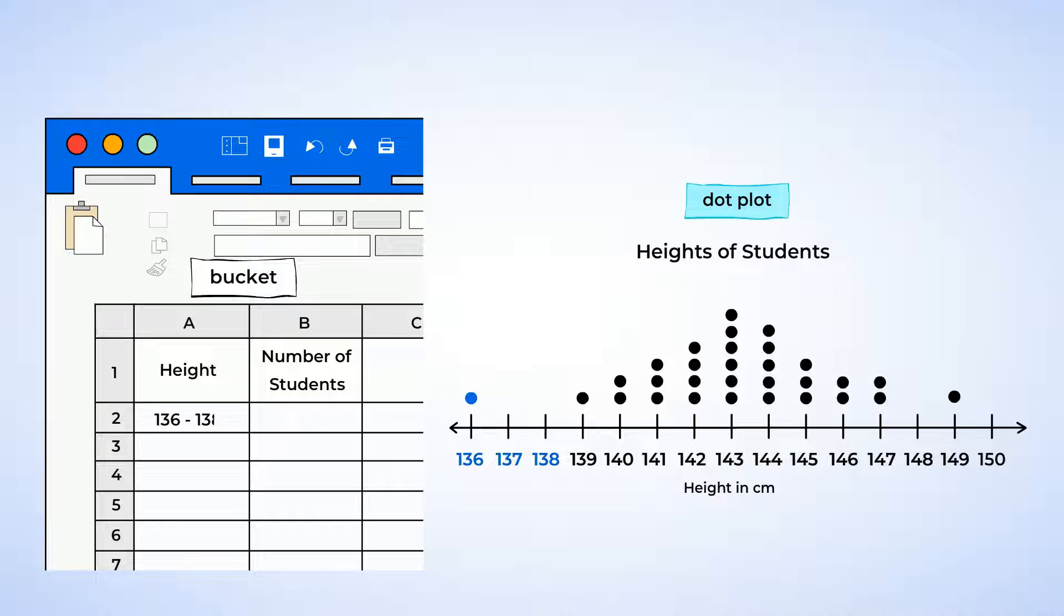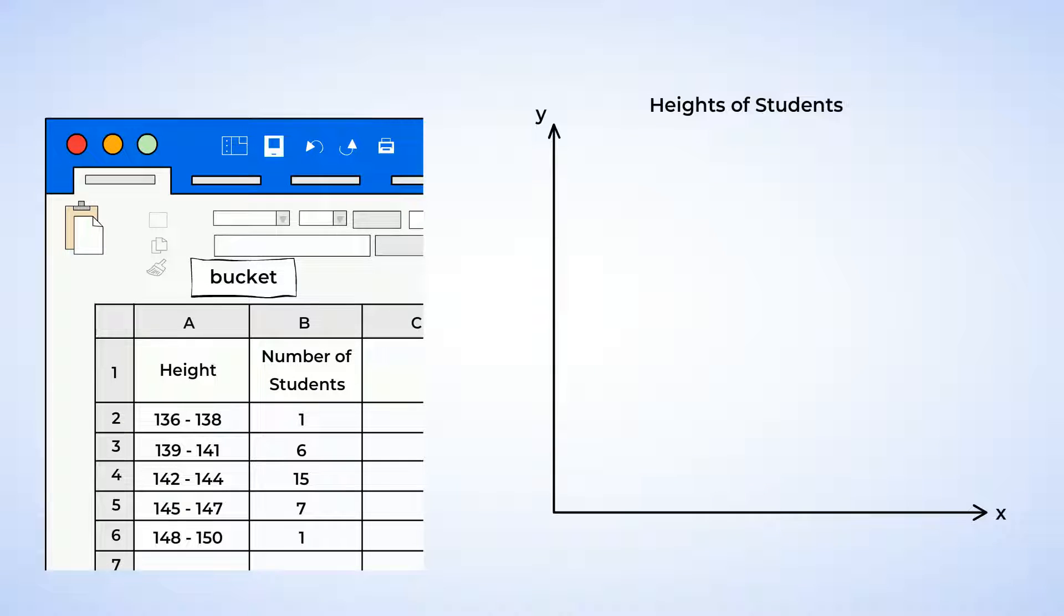Now, we grouped the data into equal intervals of three, and our bins are 136 to 138 centimeters, 139 to 141 centimeters, and so on. And now, it's time to graph the histogram.